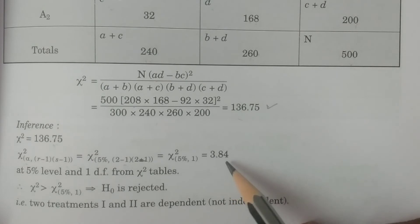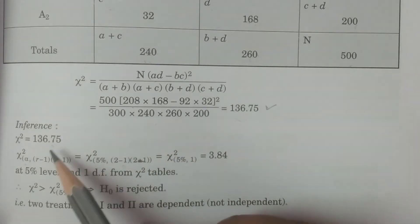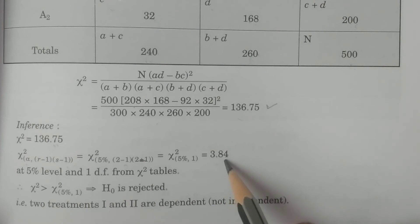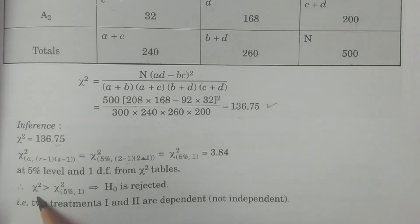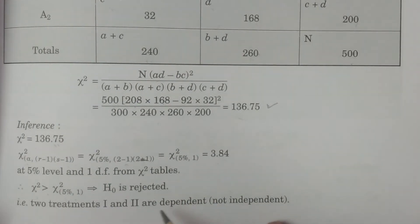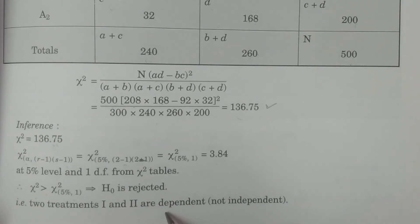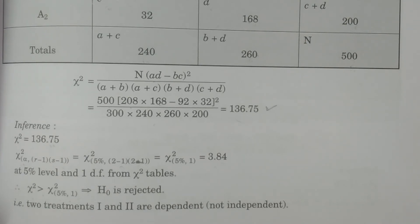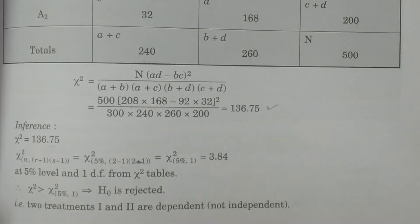From the chi-square table at 5% significance with 1 degree of freedom, the tabulated value is 3.84. Since 136.75 is greater than 3.84, H₀ is rejected. Therefore H₁ is accepted: treatments one and two are not independent. The two treatments applied on the 500 agricultural plots are not independent. This is our conclusion.